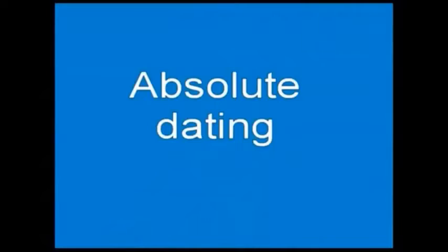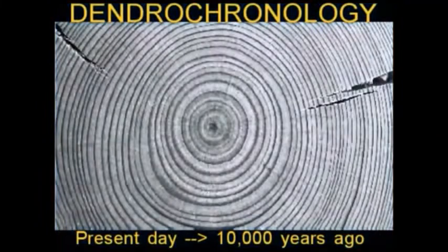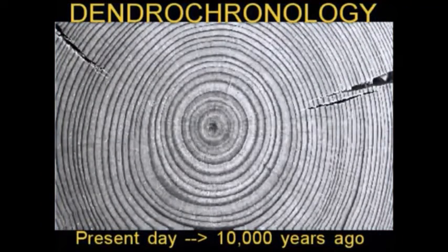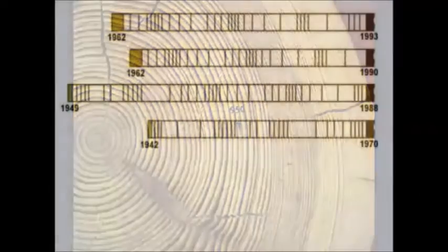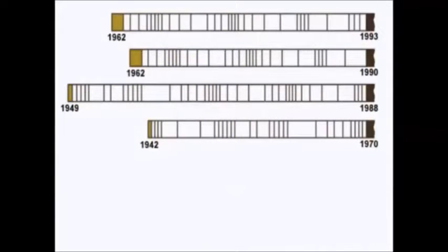To get the absolute dates of these rocks, scientists use a variety of different methods. I'll start with one of the easiest and most recent. We all know trees have rings because in summer they grow faster than in winter, but seasonal growing conditions vary according to the weather, so the bands will vary in size. Each time period in each geographical location has its own distinctive pattern of tree rings, like a fingerprint.